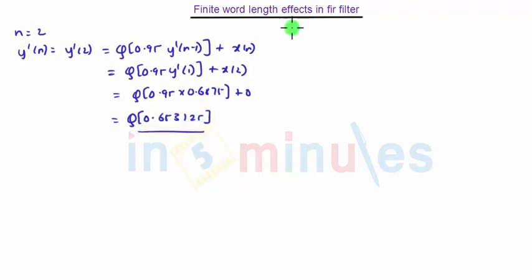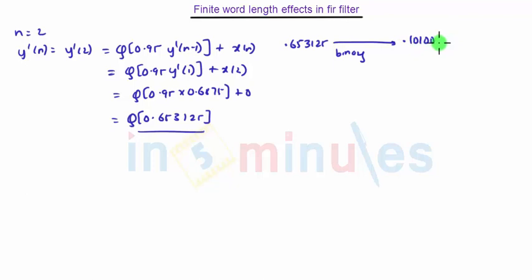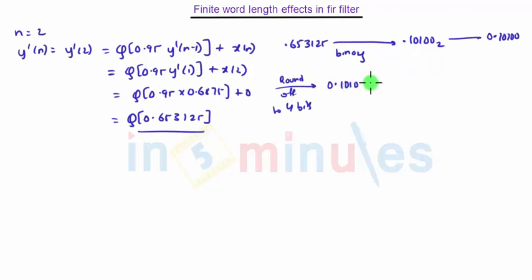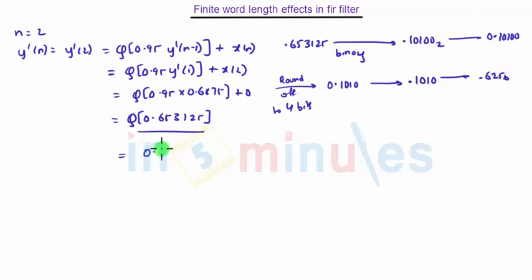Now we will again quantize this product. The value is 0.653125. First we convert it to binary, which turns out to be 0.10100. Then we add the sign bit: 0.10100. We round off to 4 bits giving 0.1010. Extracting the sign bit gives 0.1010, and converting to decimal gives 0.625. So after quantization the result is 0.625, which is 0.1010.